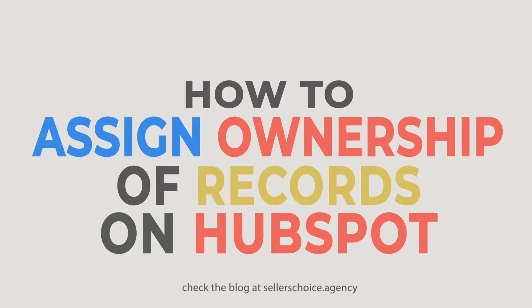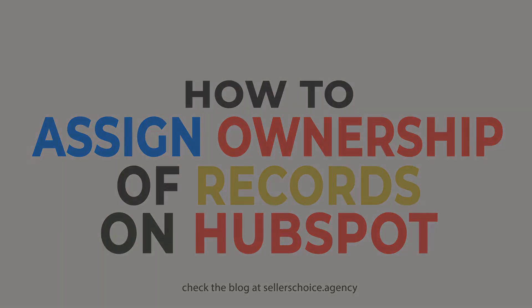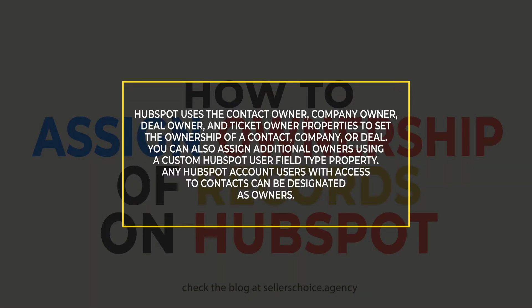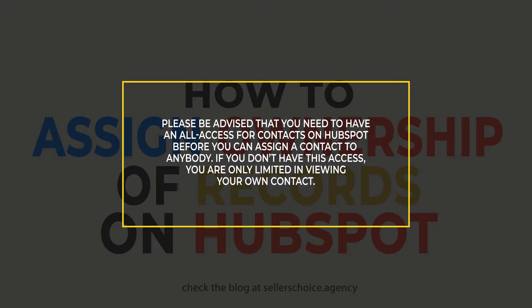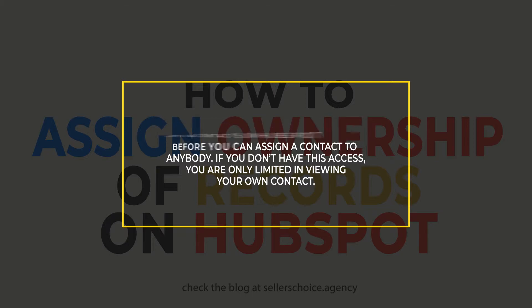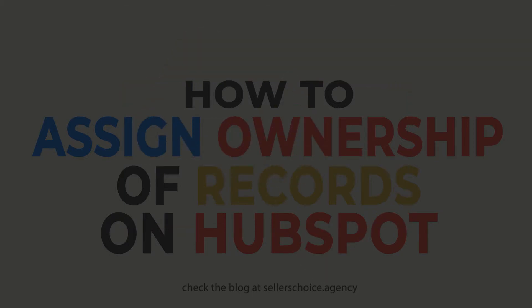No man is an island — that is the reason why we need somebody's help. We can't be good at everything, so we need to assign the task to somebody. HubSpot uses the Contact Owner, Company Owner, Deal Owner, and Ticket Owner properties to set the ownership of a contact, company, or deal. You can also assign additional owners using a custom HubSpot user field type property. Any HubSpot account users with access to contacts can be designated as owners. Please be advised that you need to have all-access for contacts on HubSpot before you can assign a contact to anybody. If you don't have this access, you're limited to viewing your own contacts. You may want to consult or ask your admin for additional access.